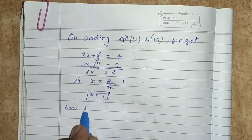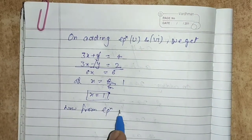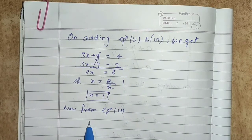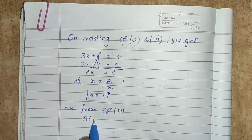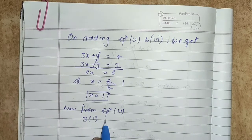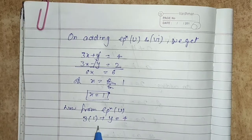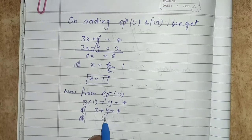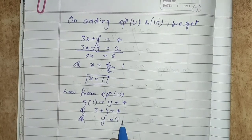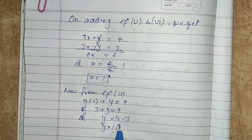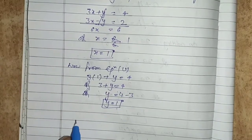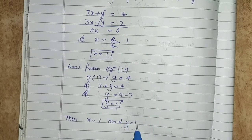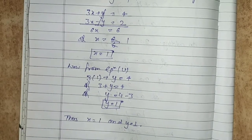From equation 5: 3x plus y equals to 4. Substituting x equals 1: 3 into 1 plus y equals to 4. So 3 plus y equals to 4, giving y equals to 4 minus 3, which is y equals to 1. Thus x equals to 1 and y equals to 1 is the required solution of the given pair of equations.